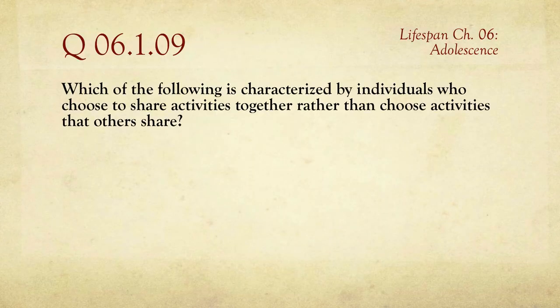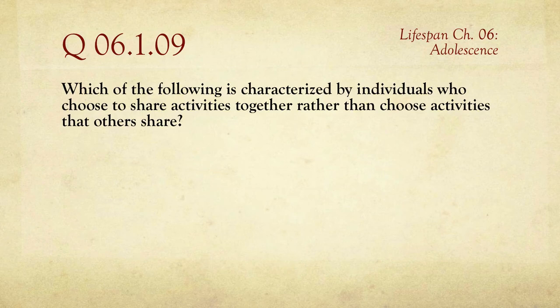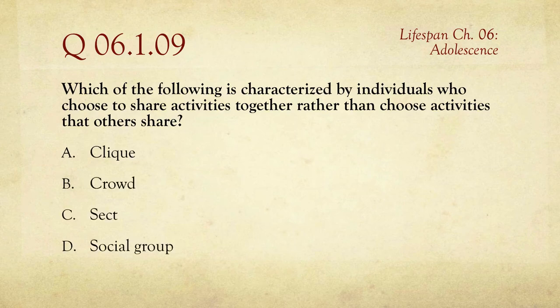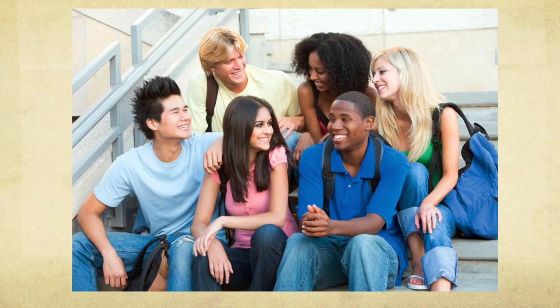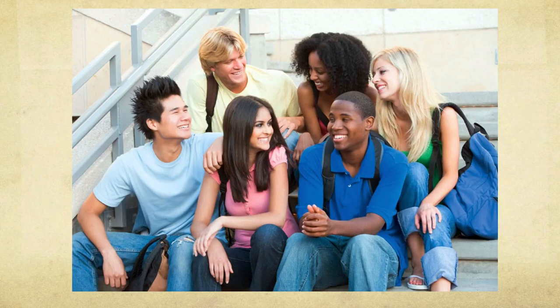Question number nine: which of the following is characterized by individuals who choose to share activities together rather than choose activities that others share? The idea is you first pick the activity and then pick people to do it with, as opposed to picking your friends first and then doing whatever together. The choices are a clique, a crowd, a sect, or a social group. The answer is a clique, which is high in conformity and consistency because the activity is chosen first and then people who match are selected — so you tend to get people who look and act very similar.